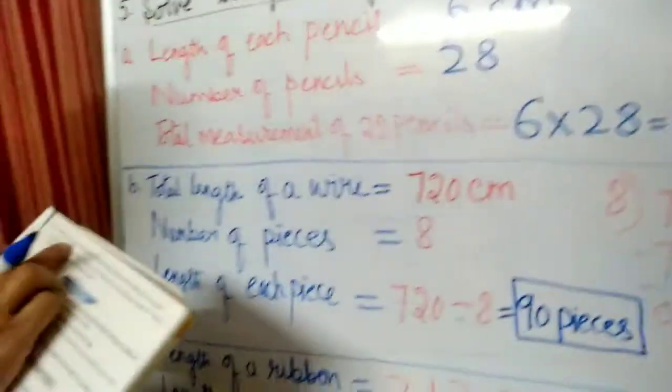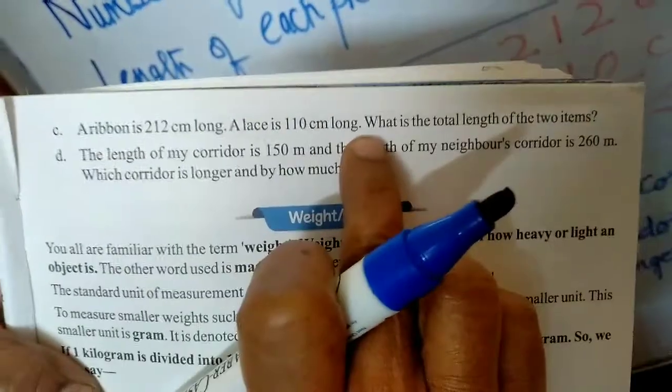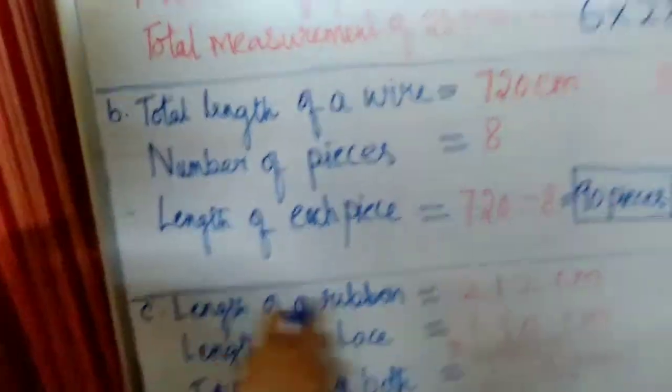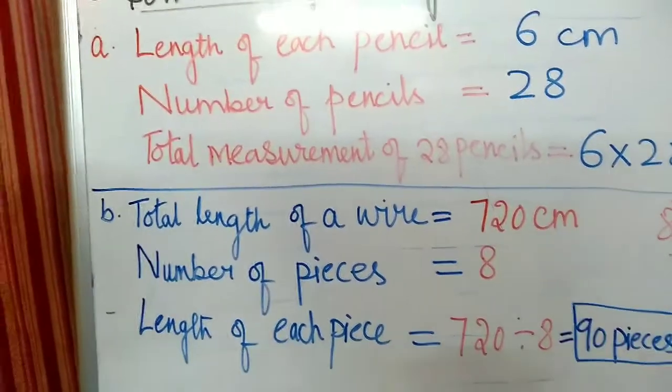Next, a ribbon of 212 cm long and a lace of 110 cm long. What is the total length? So length of ribbon, length of lace. If you add, you will get 322 cm.